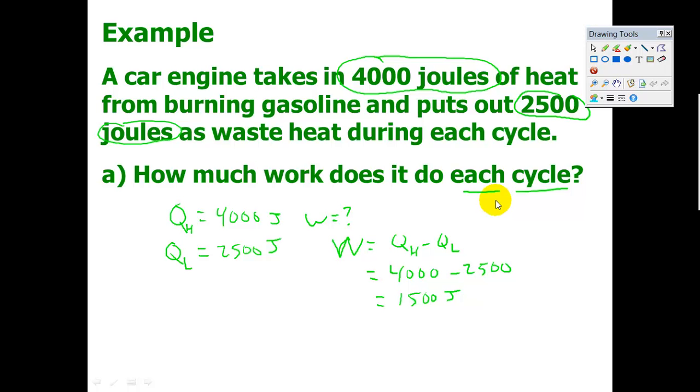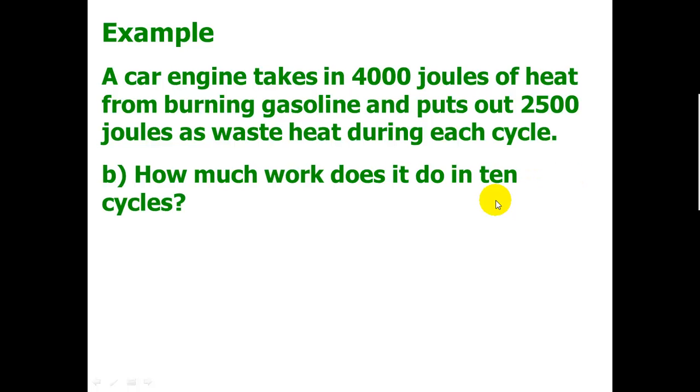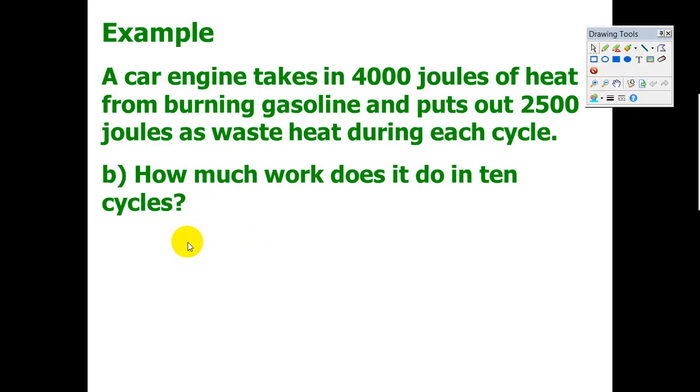In part B, we're going to take a look at 10 cycles. The engine goes through continuous cycles. You might even call each of those cycles one RPM, one rotation of the motor. If you've ever looked at a tachometer in your car, that's the dial that shows how fast the engine is turning. It has units of RPM. When we talk about per cycle, you should recognize that the engine is doing literally like a thousand or more cycles every minute. As you're driving down the freeway, typically your engine is rotating at about 3,000 RPM. So in 10 cycles, we just take that last answer and multiply it by 10. We get 15,000 joules.